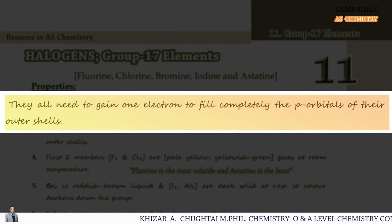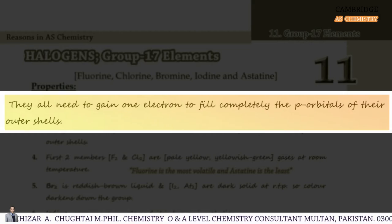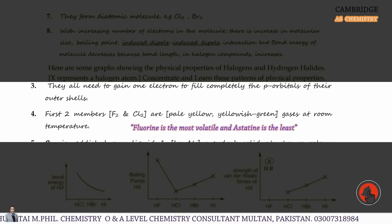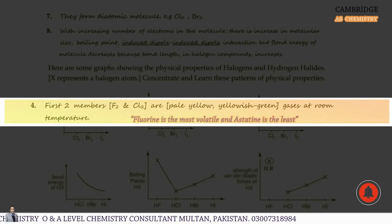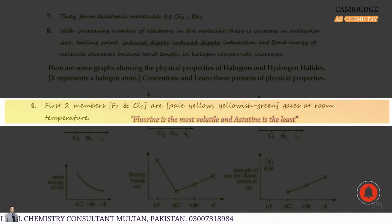Property 3: They all need to gain one electron to fill the p-orbital completely in their outer shell. Property 4: First two members, Fluorine and Chlorine, are pale yellow and yellowish green gases at room temperature.